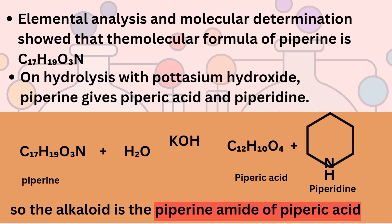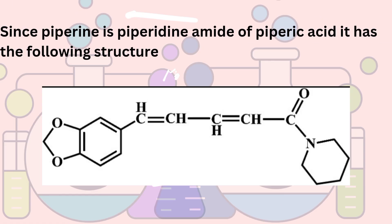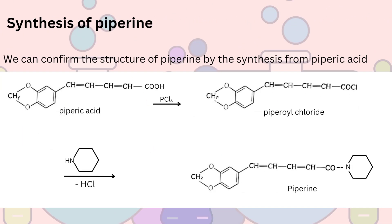We have already seen that piperine is the piperidine amide of piperic acid, so it has the following structure. This structure can be confirmed by synthesis: piperic acid is converted into piperyl chloride and condensed with piperidine to form piperine. The structure of piperine is now confirmed.